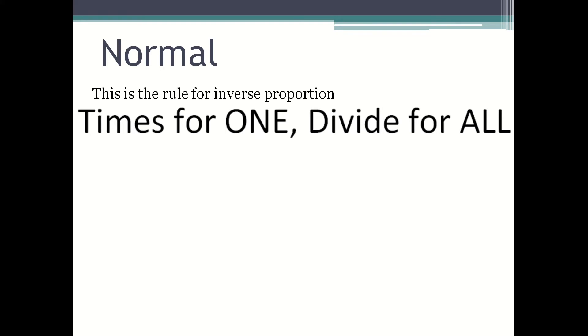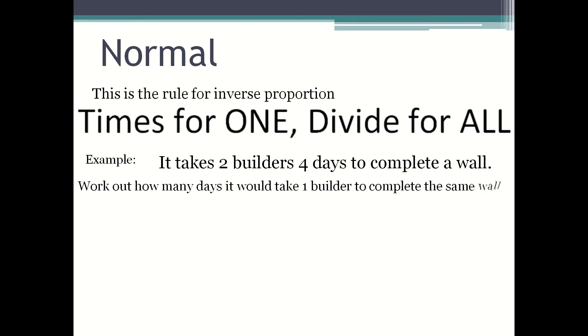Normal inverse proportion. This is the rule for inverse proportion: times for one and divide for all. For example, it takes two builders four days to complete a wall. Work out how many days it will take one builder to complete the same wall.